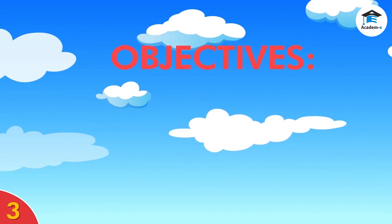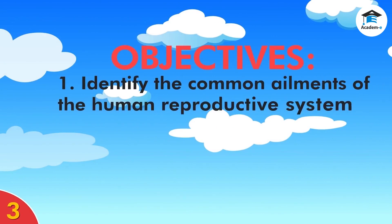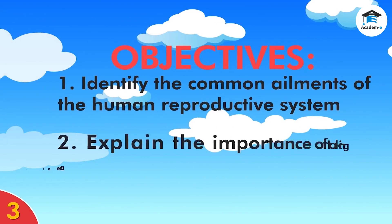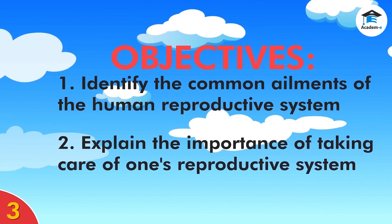Objectives: At the end of the lesson, you should be able to: one, identify the common ailments of the human reproductive system; two, explain the importance of taking care of one's reproductive system.